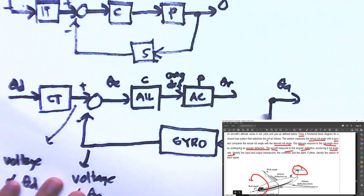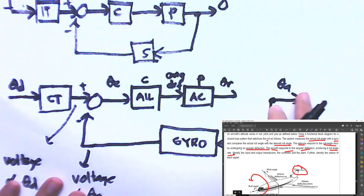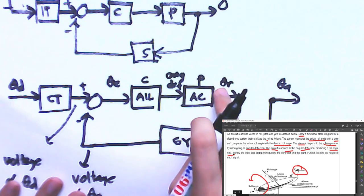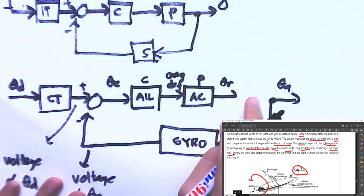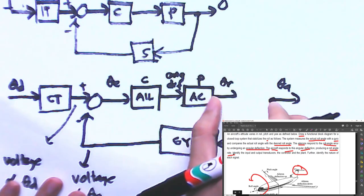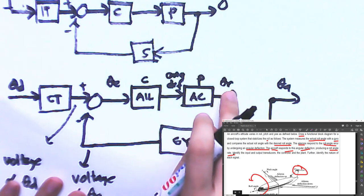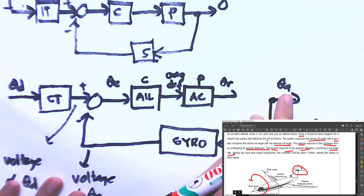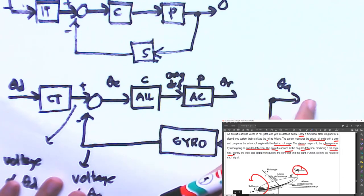The problem is that the output from the plant is the roll angle rate ω, but what we need is the actual roll angle position θ_a. These are different: rate is the speed of angular change, while the other is angular position. We need to reconcile these two signals.